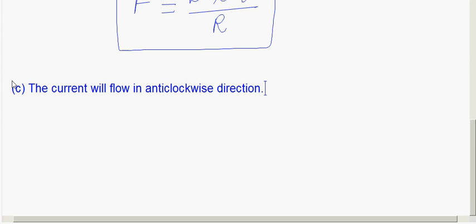Cross means the field goes into the plane of the paper. To oppose it, we need a dot field (out of the paper), which requires anti-clockwise current in the closed loop. Therefore, the induced current flows anti-clockwise in the loop.